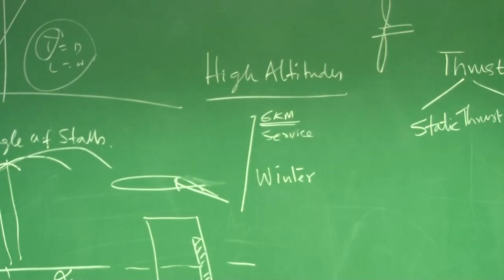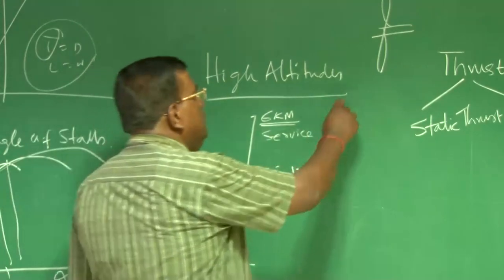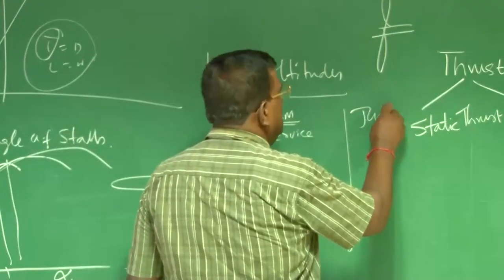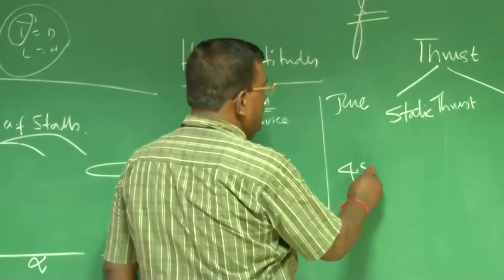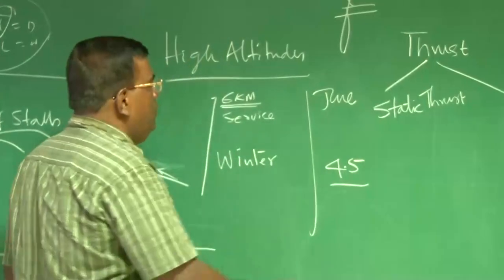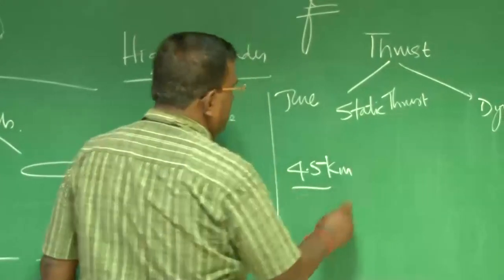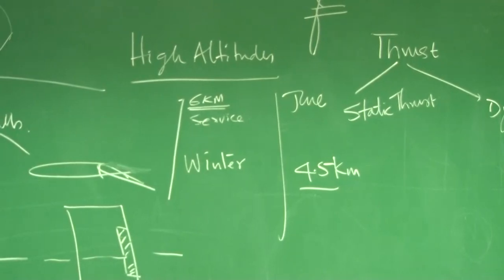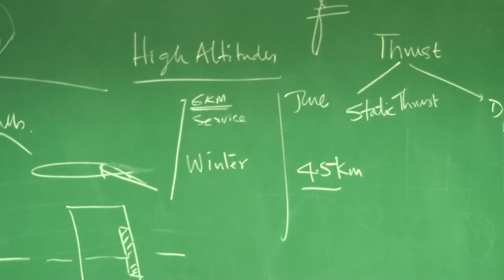Then we again repeated this trial in June. We could find, we could only, for everything remaining same, we could only go up to 4.5 kilometer. That is a service ceiling, almost 4 or 5 kilometer you could achieve.